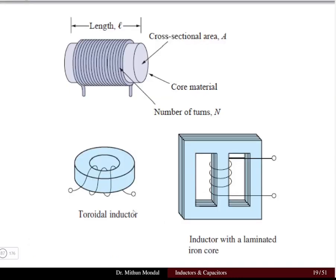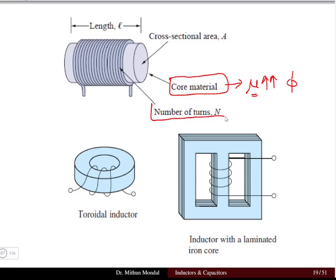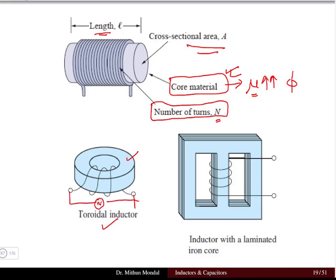Here are a few pictures showing how inductors are formed. We have a core material — those materials whose permeability is high. The inductors are in the form of a coil with a number of turns wound on the core material. Physical dimensions include length, number of turns, and cross-sectional area of the core.